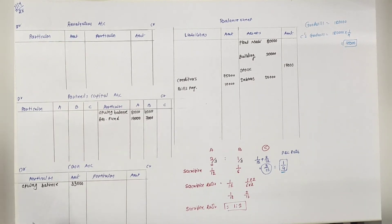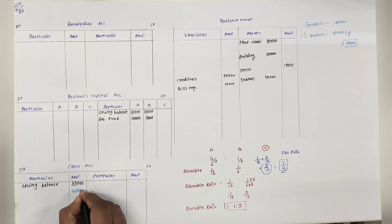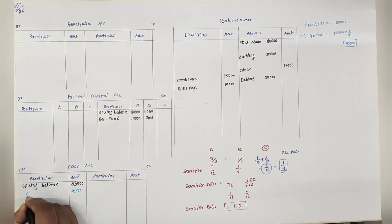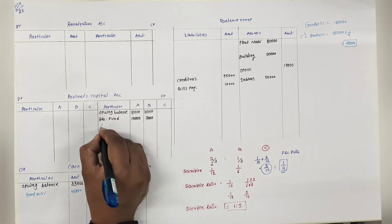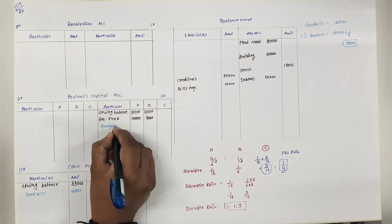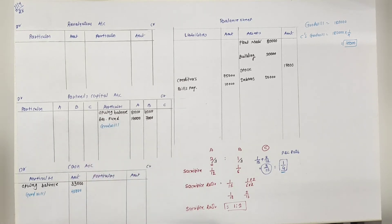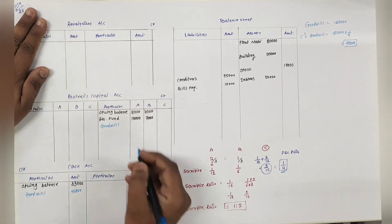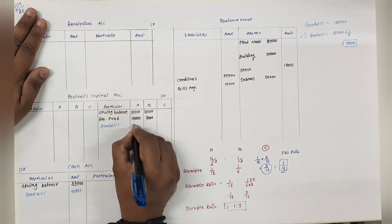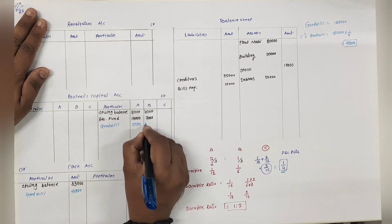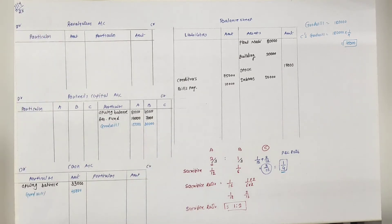Goodwill कितनी लाएगा C? 45,000 cash में लाएगा - cash debit side पे लिखेंगे goodwill. और दोनों partners के बीच में sacrifice ratio के हिसाब से - यानि कि 1:2 के हिसाब से - share होगा goodwill. Amount आएगा 15,000 and 30,000.